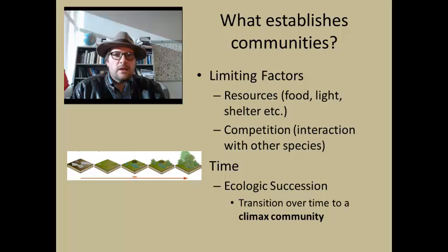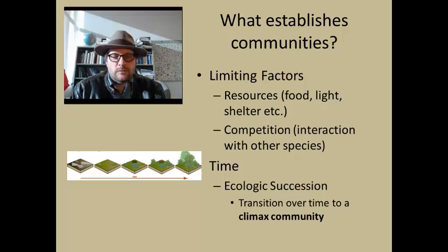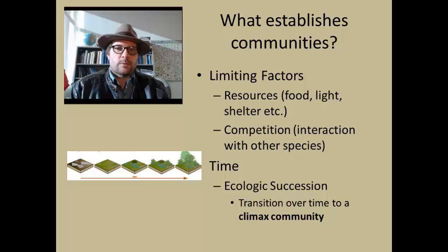Ecological succession is the transition of a community over time toward a climax community. This is a very important principle in ecology: time is often required for the settlement of key species, and with each new species it facilitates new niches within the assemblage for additional organisms to join. Thus, over time the community becomes more diverse and reaches a climax community — an assemblage that is at equilibrium. Identifying how long a climax community takes to establish itself is an important part of paleoecology.